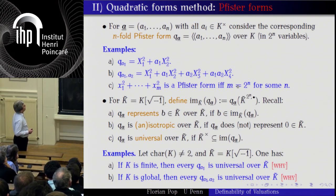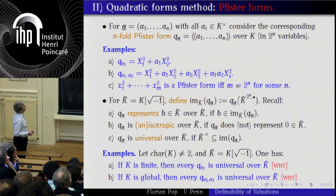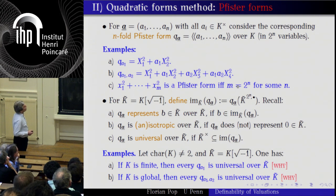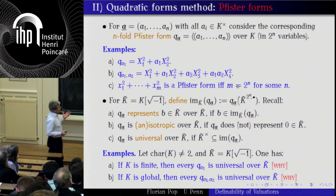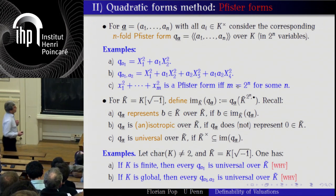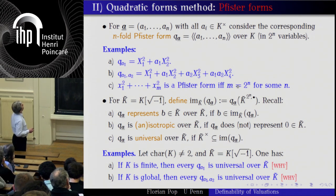If the characteristic is different from two: if K is finite, then every one-dimensional Pfister form is universal. And if K is global, then every two-variable Pfister form is universal. The only way I know to prove this is using local-global principles.